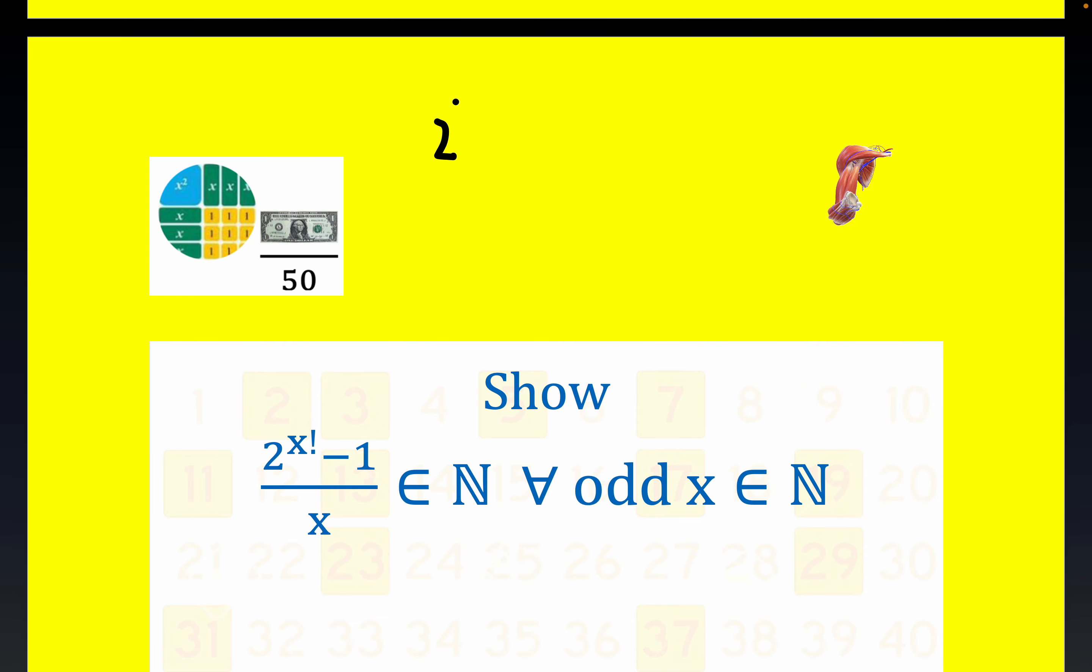I'm going to start with a concrete example of what we're trying to prove tonight. 2 to the 3 factorial minus 1 over 3 is equal to 2 to the 6, which is 64. So this is equal to 63 over 3, which is equal to 21.